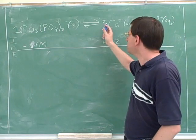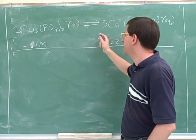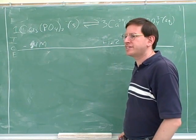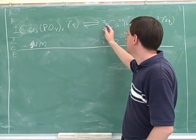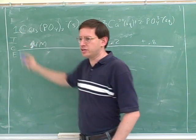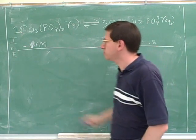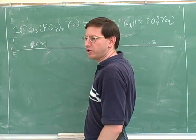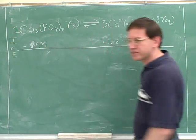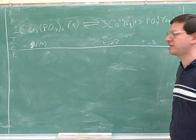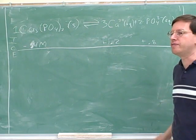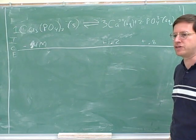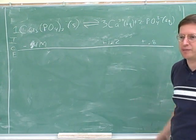Notice that the coefficients don't really tell us directly about the start or the end — the coefficients tell us about the changes. What the coefficients tell us is that this change should be three times bigger than this change, this change should be two times bigger than this change, or this change should be one-third as big as this one. So if you know one of the changes, you can always find the other changes by using the coefficients.